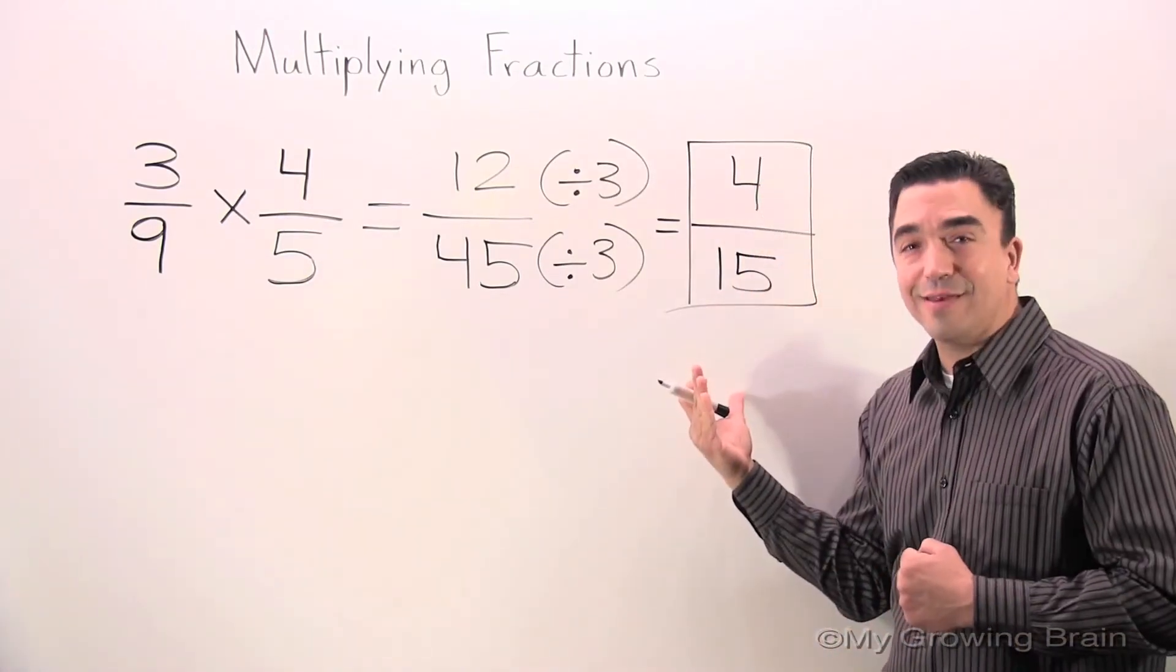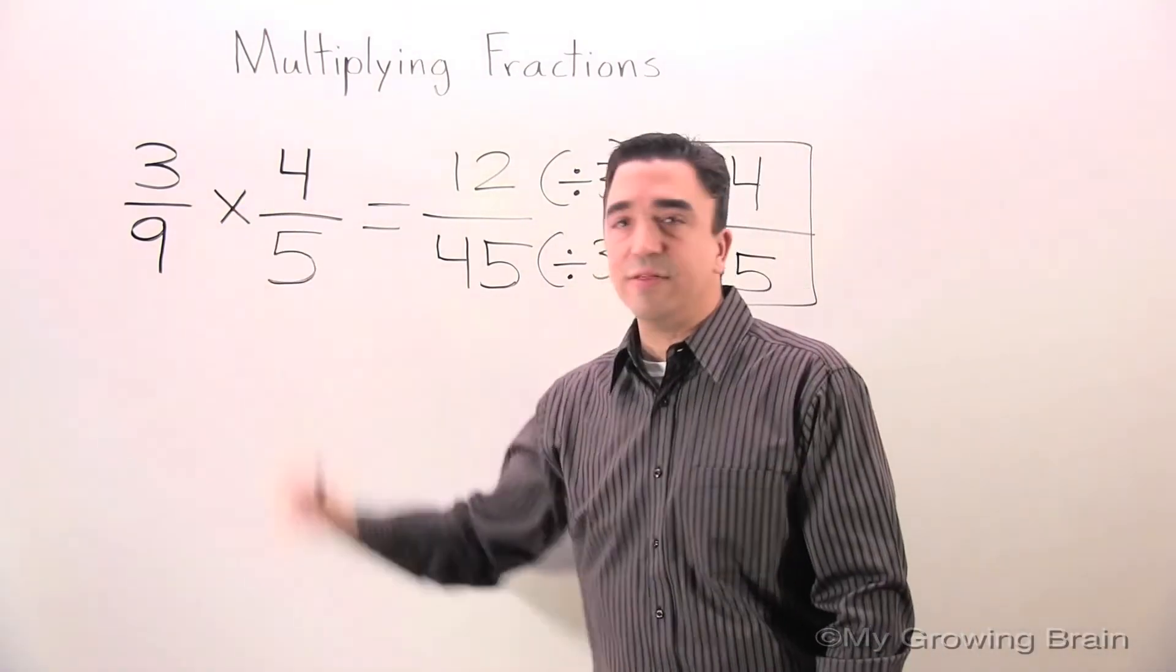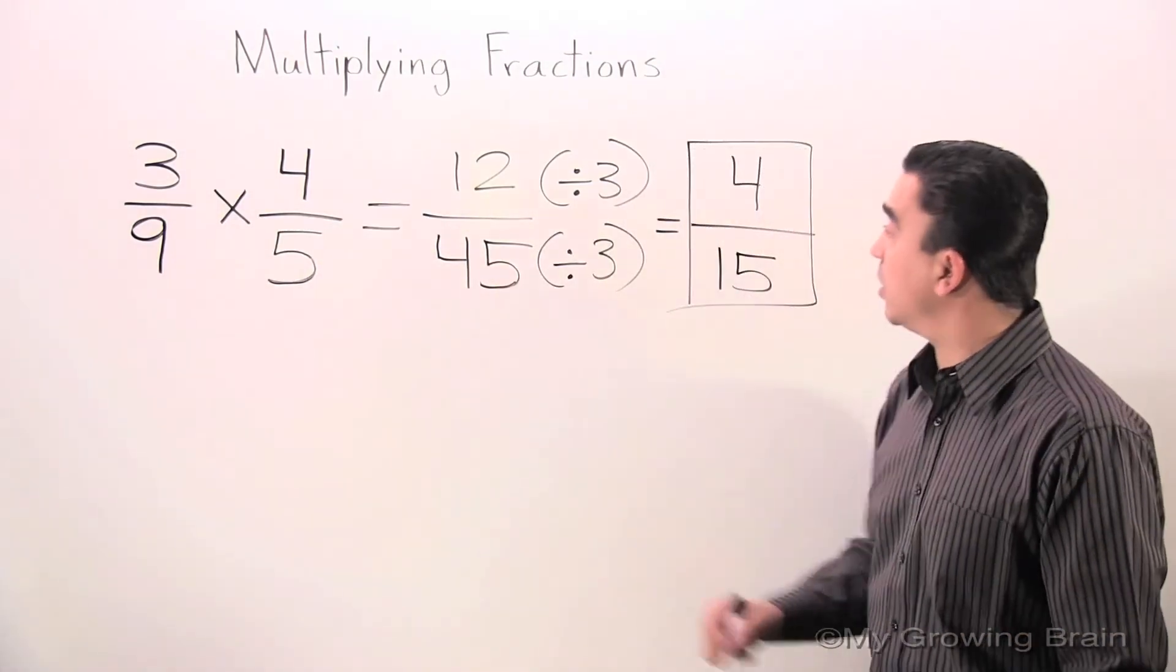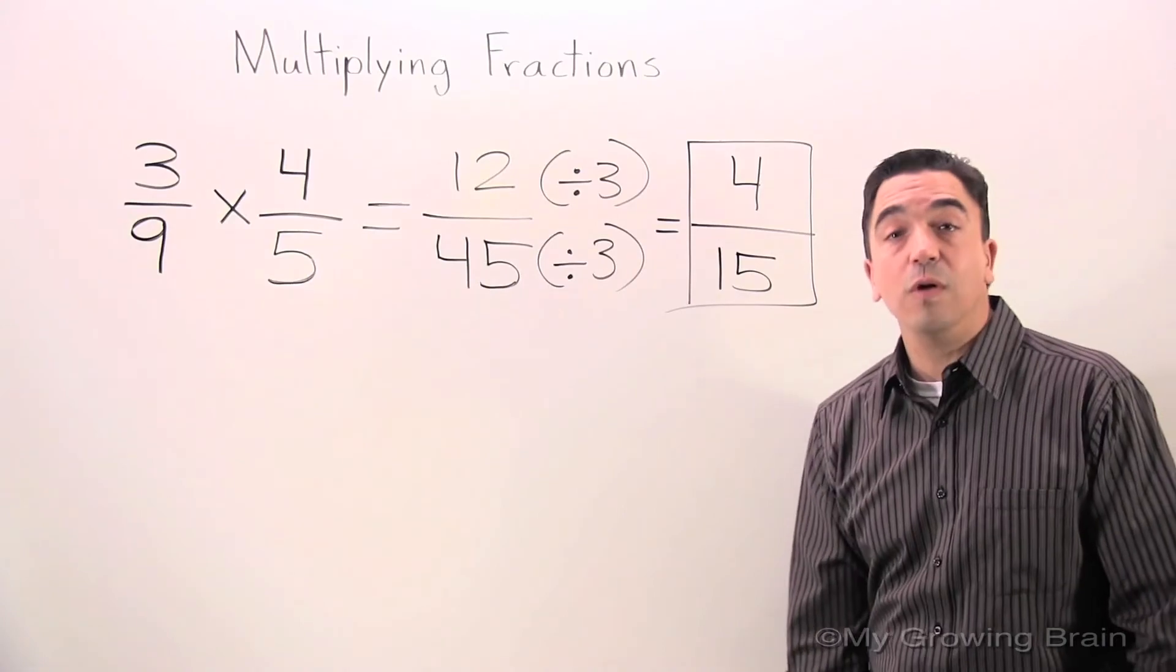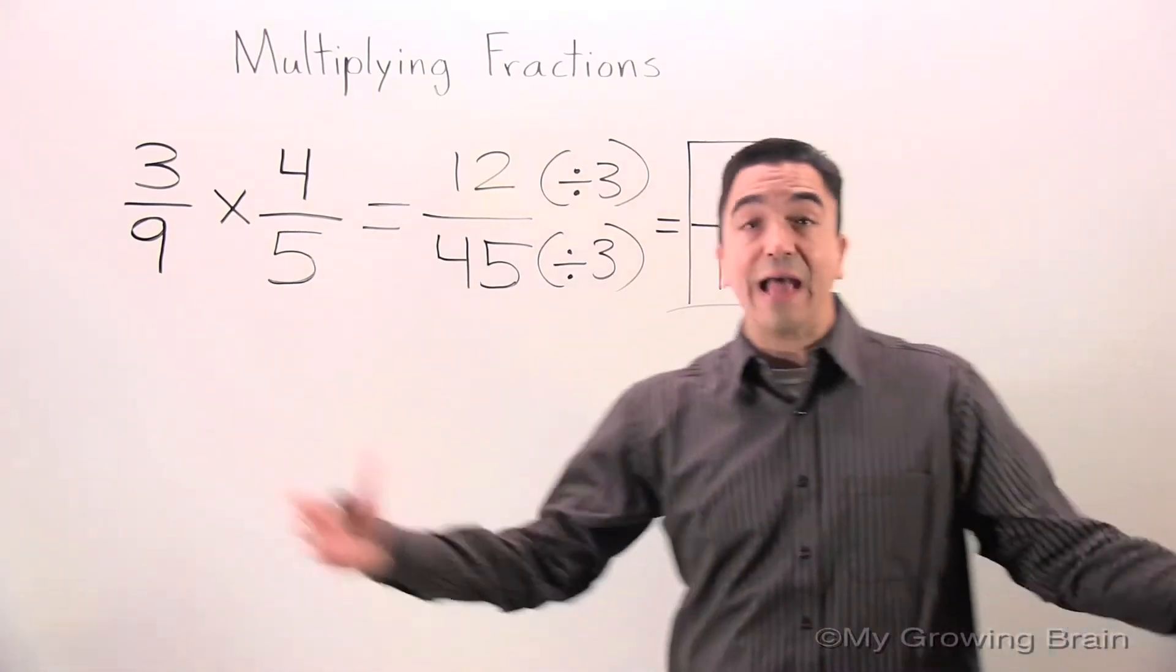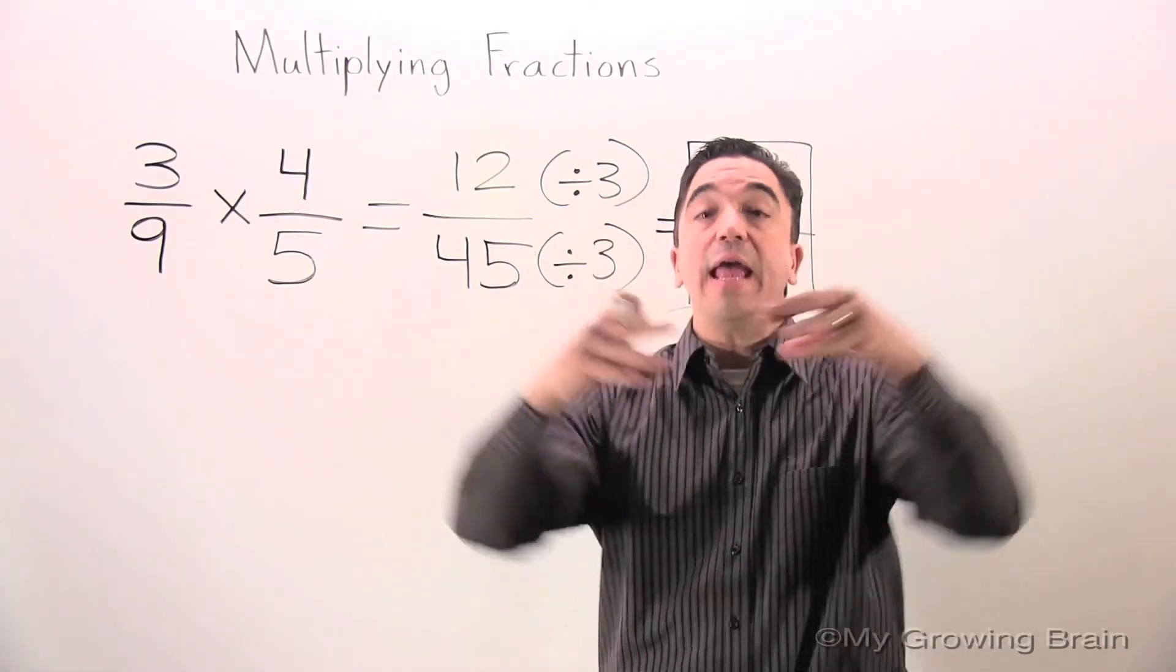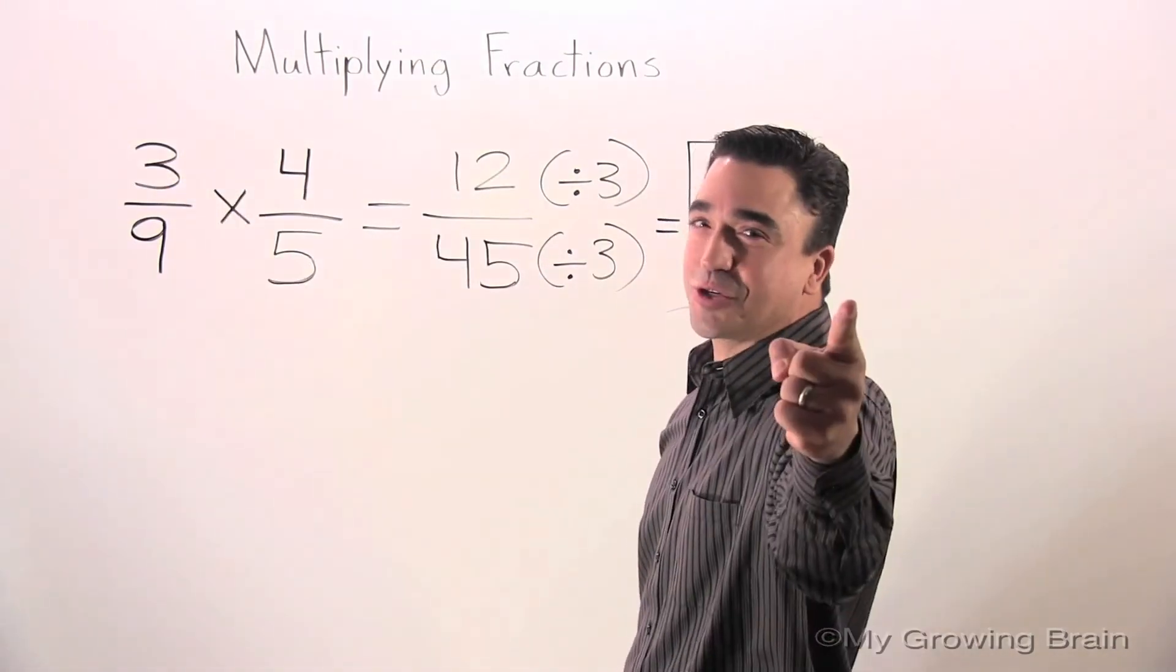That is simplest form. 3 ninths times 4 fifths is equal to 4 fifteenths. That concludes our lesson on multiplying fractions. Coach Mike at My Growing Brain Challenge Yourself.